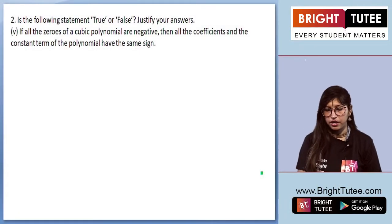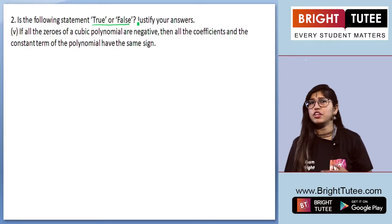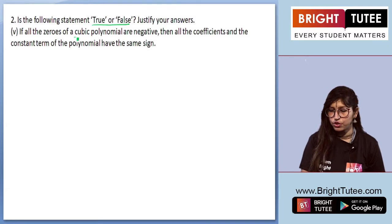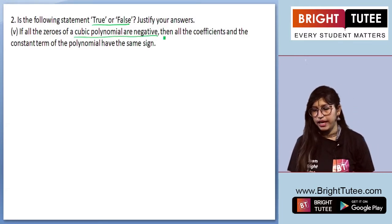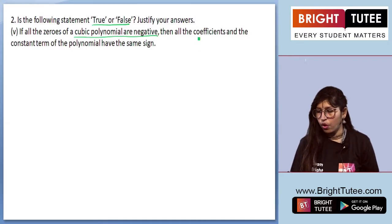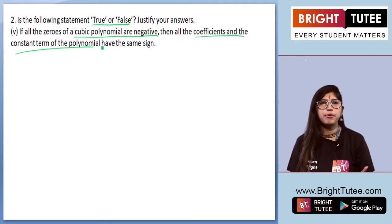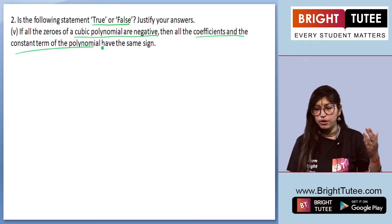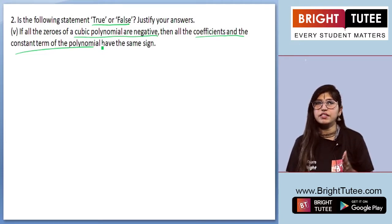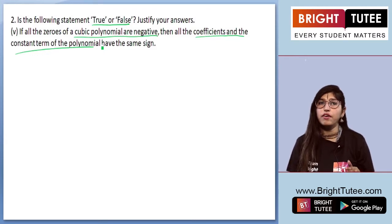Question 2, fifth part. Over here they ask whether the statement is true or false and we need to justify our answers. The question says that if all the zeros of a cubic polynomial are negative, we need to check if all the coefficients and the constant term of the polynomial have the same sign — they can be positive or can be negative.